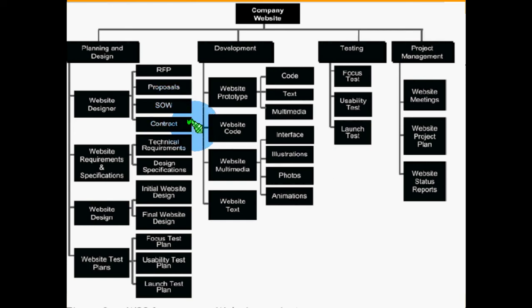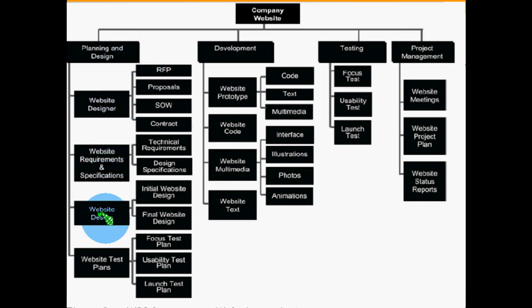There is no hard-and-fast rule while doing the WBS. It could have been structured by component — component 1, component 2, component 3, component 4 — and for each component, planning and design, development, and testing. It all depends on the discretion and creativity of the person doing the WBS. It is a fantastic tool to explain the scope of work to any relevant stakeholder.